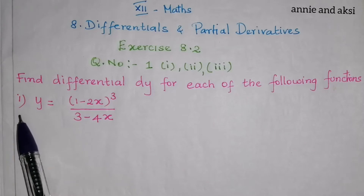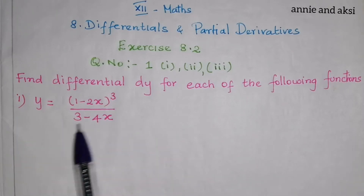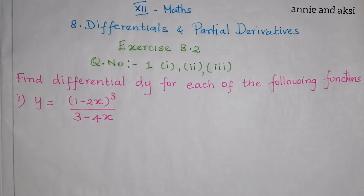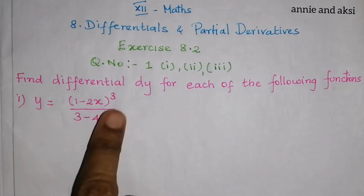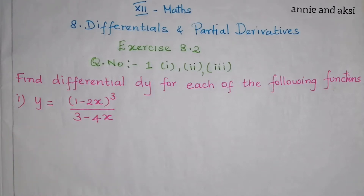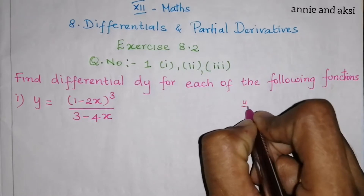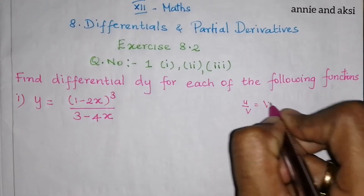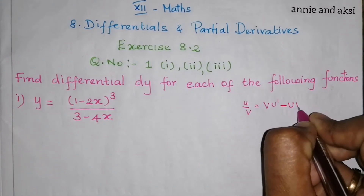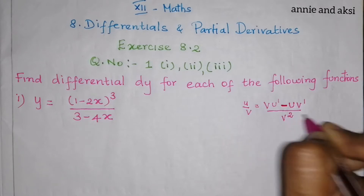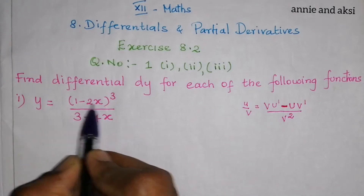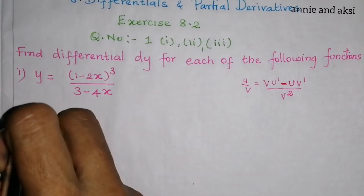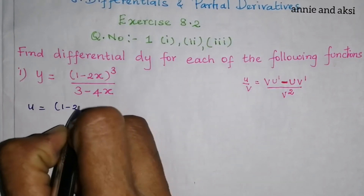For the first subdivision, y is equal to (1 minus 2x) the whole cube divided by (3 minus 4x). The differential dy uses the quotient rule formula: d(u/v) = (v·u' minus u·v') divided by v squared. We choose u equal to (1 minus 2x) the whole cube.